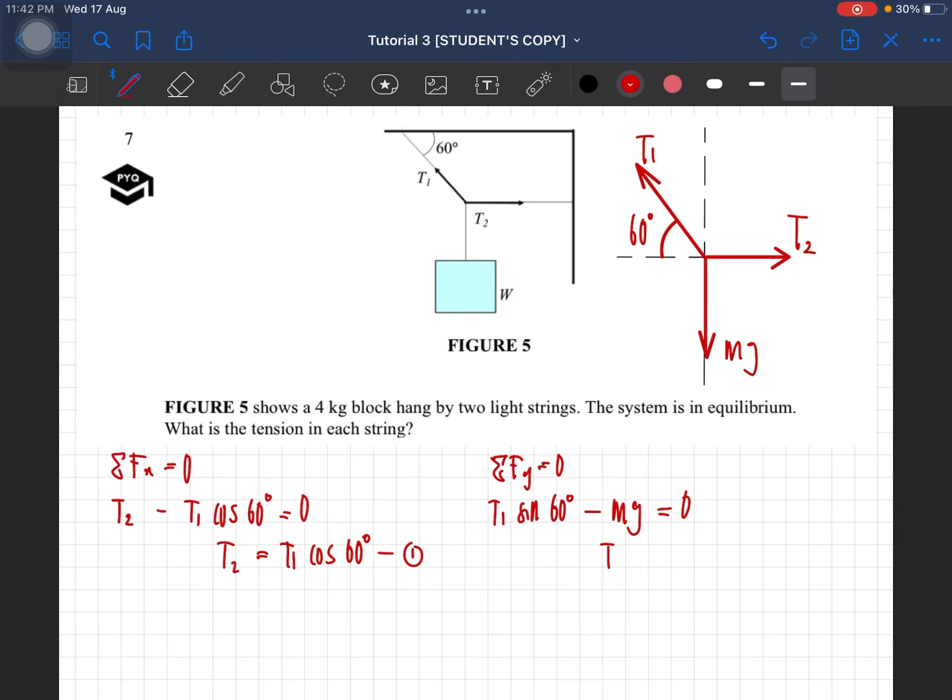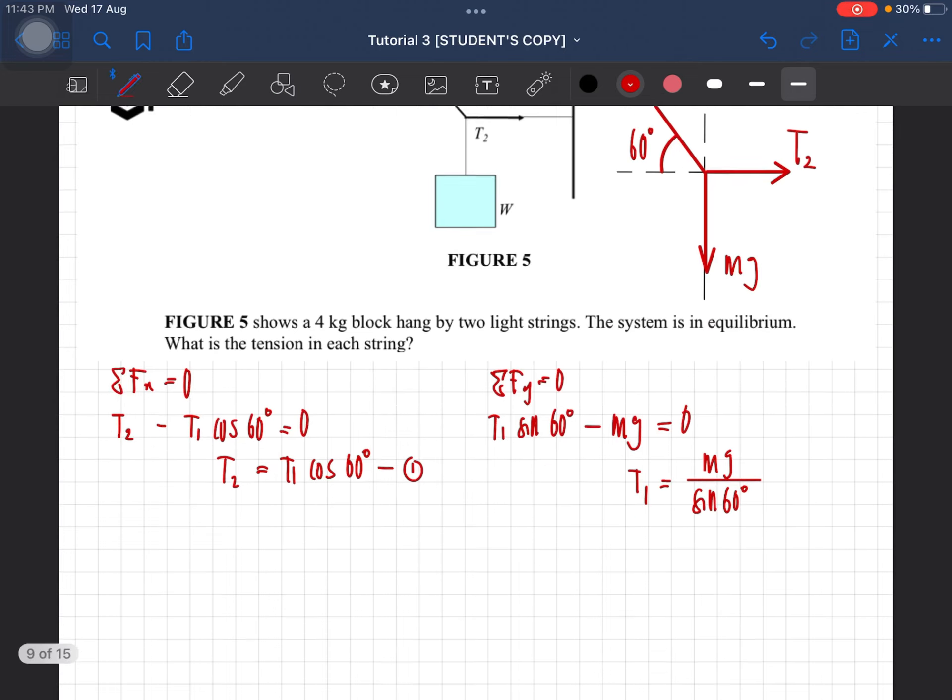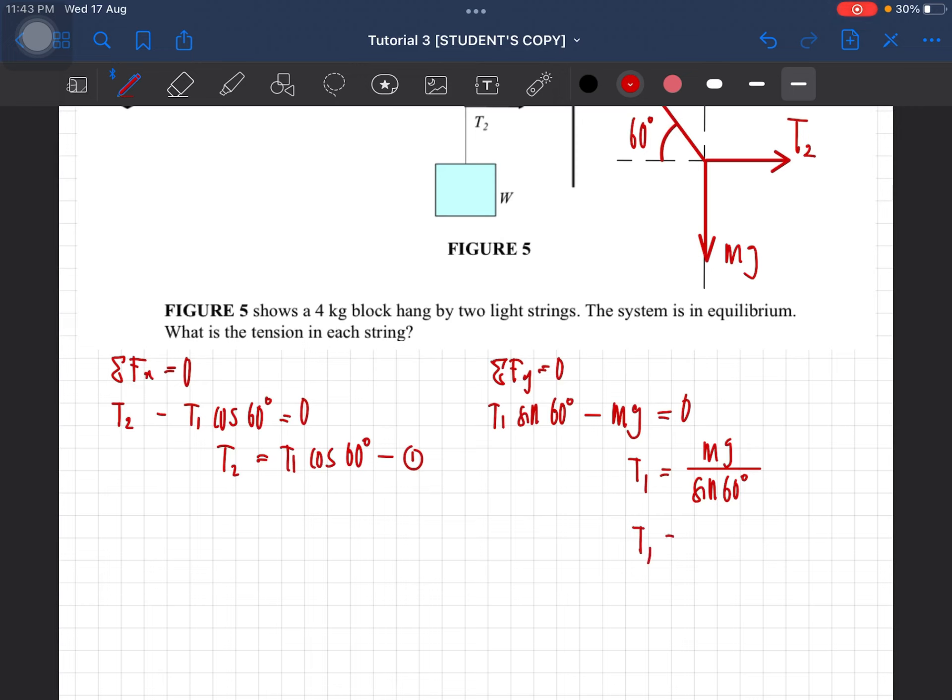So this one, we can just directly get the tension for the first tension. So this is T1 equal to mg divided by sine 60 degree.